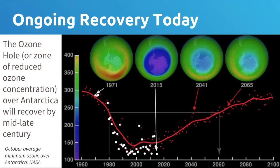This is not an exact parallel — CFCs have a different lifetime in the atmosphere than CO2 and have different consequences. But the general analogy is that there was a global problem tied to human economic activities; when we saw evidence of the problem and decided to act on it, we had a big impact and have already begun correcting the situation. Similarly, if we take action to limit CO2, the CO2 concentration in the atmosphere will begin to stabilize and we can really minimize the impact.